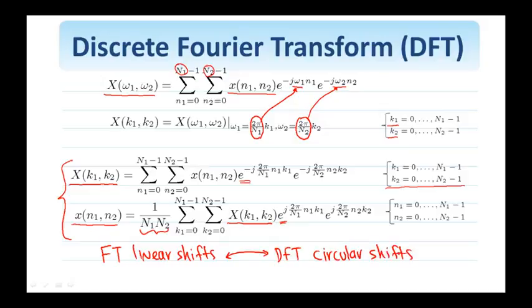One way to perform and understand circular shifts is to periodically extend the image and then perform a linear shift, but only keep the central part of the image, the baseband, or the image that is defined by n1, n2 in this window here.